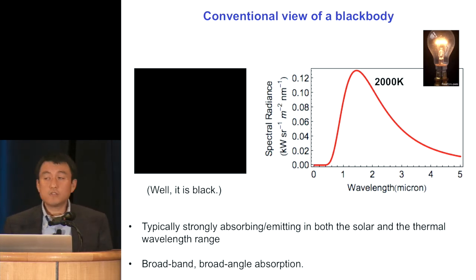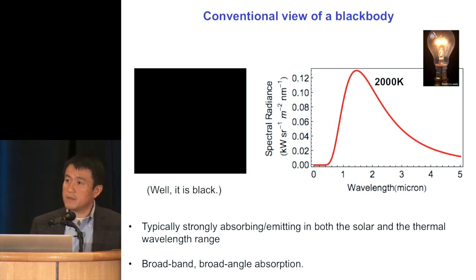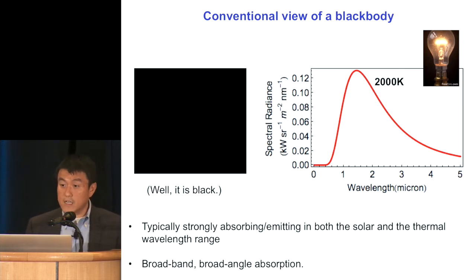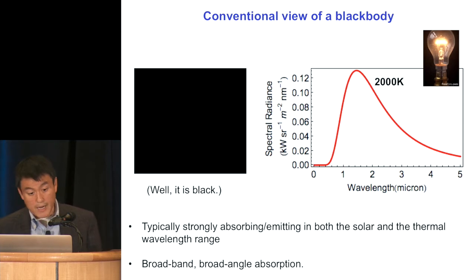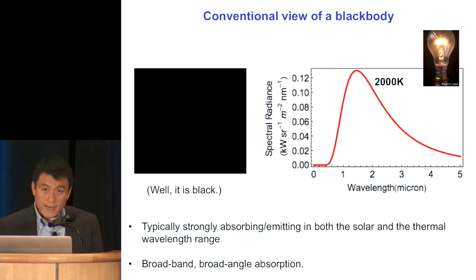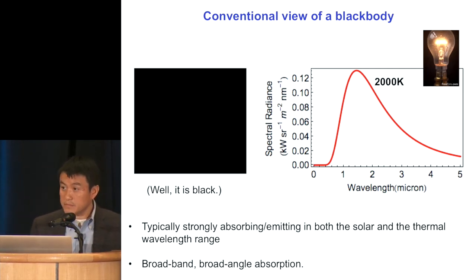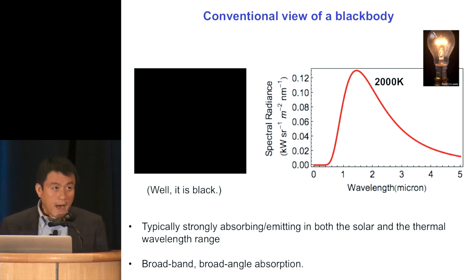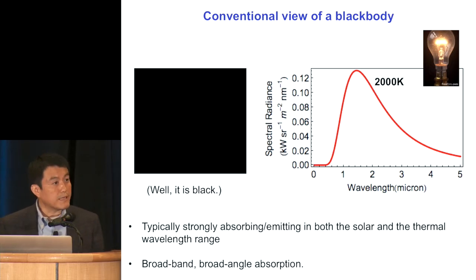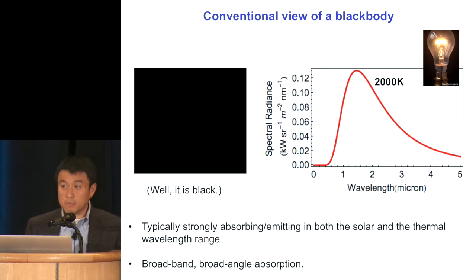Generally speaking, these radiations are very broadband. They span both the thermal wavelength range up to maybe 10 microns or so, all the way into the visible wavelength range if you heat to a high enough temperature. These are also broad-angle emissions. In the past decade or so, what has been emerging is that, in fact, even though this is what's taught in the textbook, this is not what a thermal radiator needs to be.